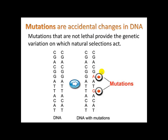Mutations are accidental changes in DNA that occur when DNA is replicated as cells multiply and divide. Mutations that are not lethal provide the genetic variation on which natural selection acts. Here we see regular DNA versus DNA with mutations — for example, where a G became an A, or a T became a G. Oftentimes these mutations can be corrected by the body, as there are enzymes whose function it is to repair DNA that wasn't copied properly. However, sometimes DNA is not repaired correctly, and mutations continue on through cellular reproduction so that further cells receive this mistake.